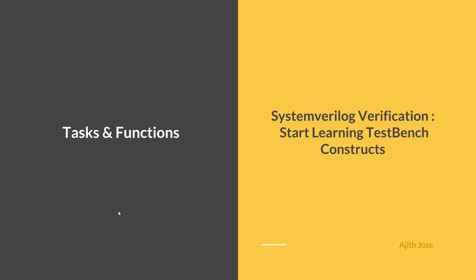Welcome to the next session of this course. In this session you will be learning about different subroutines available in SystemVerilog. SystemVerilog supports two types of subroutines: functions and tasks. The idea behind using a subroutine is common across every programming language — you have a set of code that appears repeatedly, or you want to abstract some part of your code to make it more readable, so you place it in a subroutine and call it whenever needed.